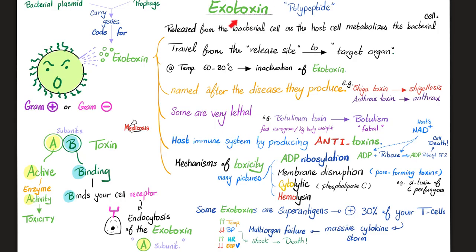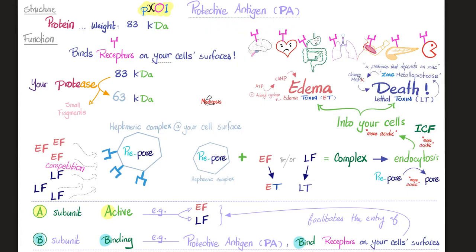Remember the exotoxin A-B concept — two different subunits. Subunit A, which is active, and subunit B, which binds your cell receptor and facilitates the entry of subunit A into your own cell. Can we apply the same concept for anthrax? Yes, indeed. The A subunit is the edema factor and the lethal factor. The B subunit is the protective antigen — that's why I call it the middleman, the wingman. It helps edema factor and lethal factor enter into the cell.